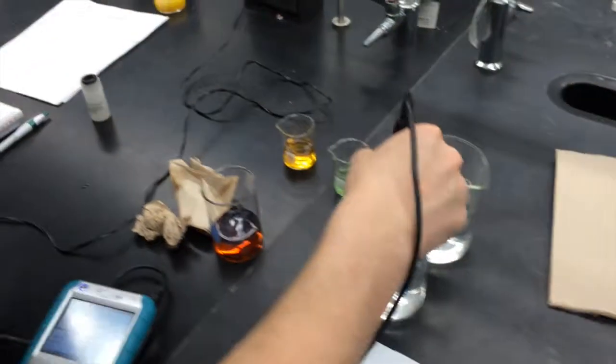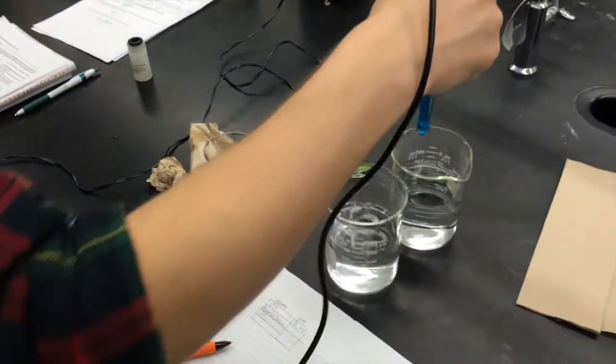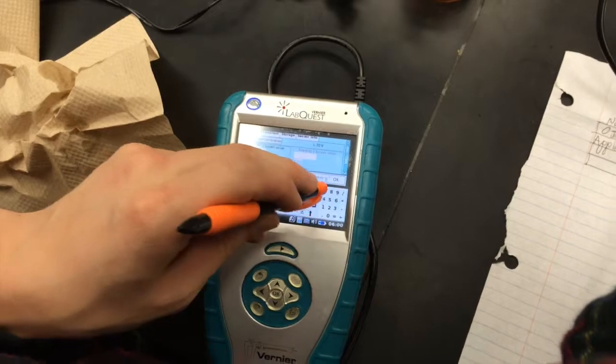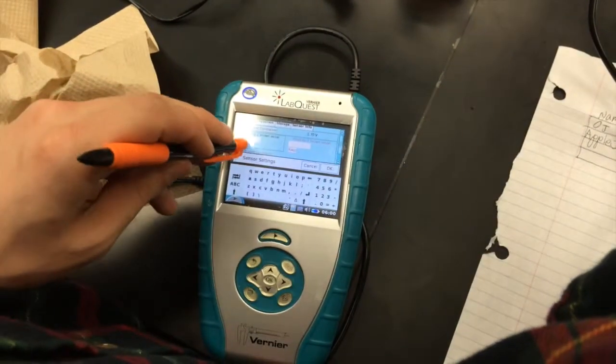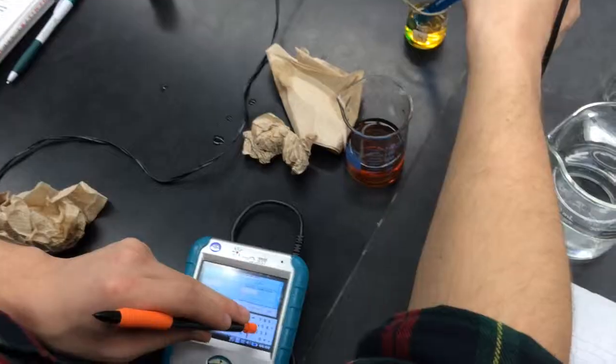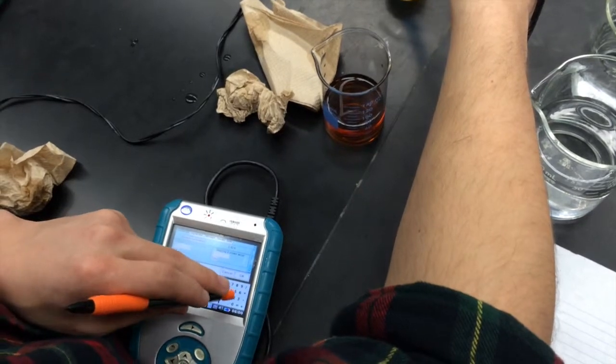Here you can see Stephen preparing the meter to obtain the pHs of the buffer solutions. This will calibrate the meter. Here Stephen calibrates for the 7 pH buffer, and now for the 4 pH buffer.